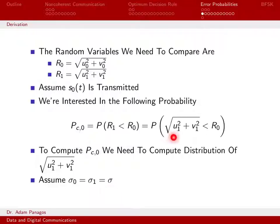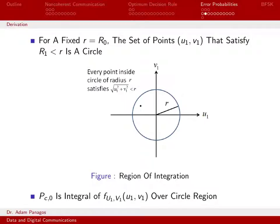Let's think about what this means. We have two random quantities, U1 and V1, squared and square rooted, and this root sum squared is less than some number R0. For some fixed number R0, the sets of points U1 and V1 that satisfy that inequality are really the points inside a circle of radius R.